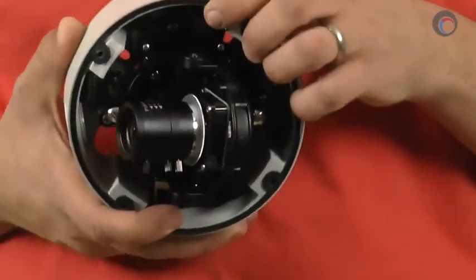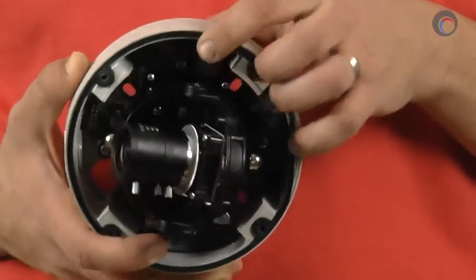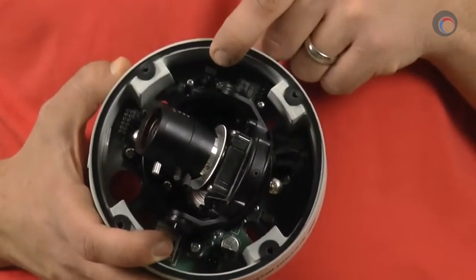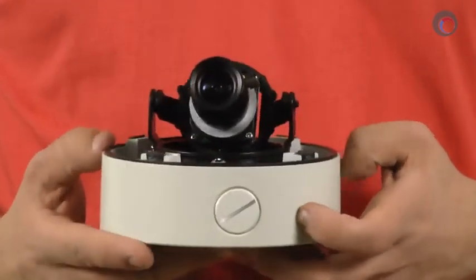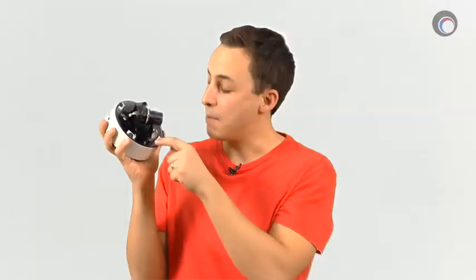Next to that is your ethernet jack which is fully PoE compliant, so you don't need to use that power connector if you don't want to. On this side of the camera are some mounting screws for an optional heater kit, and below that is your single input output jack.